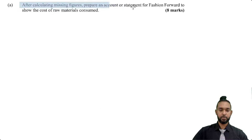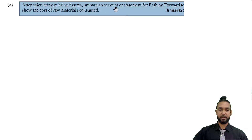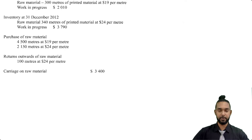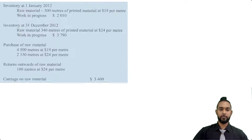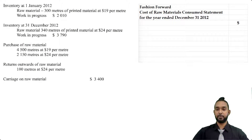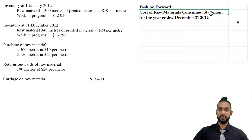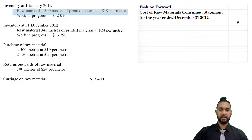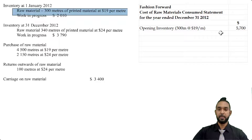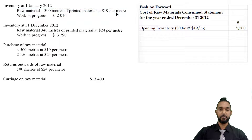So it says that after calculating missing figures, prepare an account or statement for Fashion Forward to show the cost of raw materials consumed — that's worth eight marks. Now of course it might not be a full financial statement, but whatever you are doing, please make sure to head it up properly: the name of the entity, the name of the statement — cost of raw materials consumed — and the year ended December 31st, 2012. The first thing we put in is raw material at start: 300 meters at $19 per meter, which gives us $5,700 worth of material — that's the value of the opening stock.